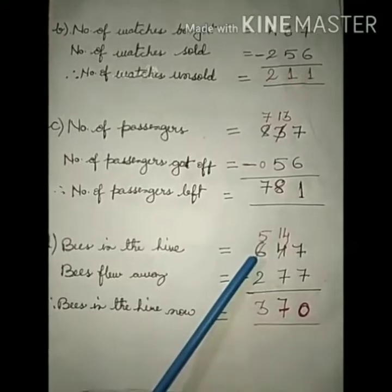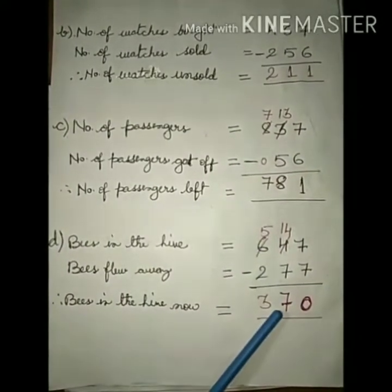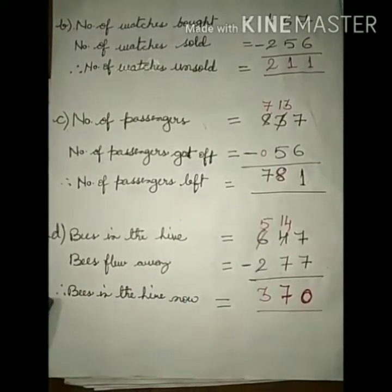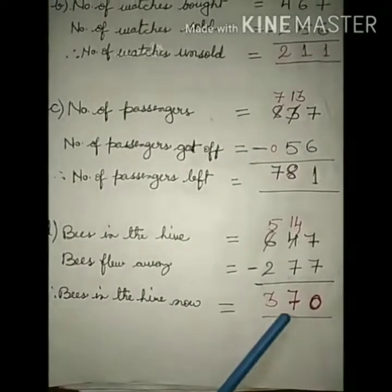So now subtract: 7 minus 7 is 0. 4 minus 7, you cannot, so borrow 1 from hundreds place from 6. So it becomes 14. 14 minus 7 is 7. It becomes 5. So 5 minus 2 is 3. So therefore, bees in the hive now is equal to 370.